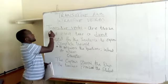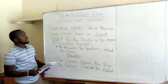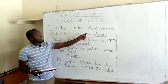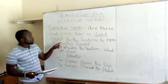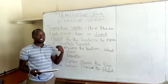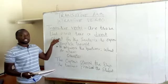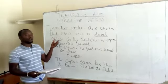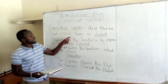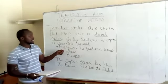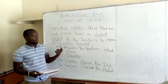We are going to begin with transitive verbs. Transitive verbs are those that must take a direct object for the sentence to express a complete thought. A direct object is usually in the form of a noun, and when we say that we must take a direct object, we mean that the actual verb must be followed by a noun.